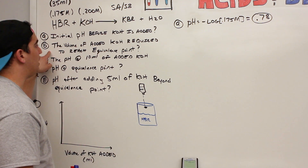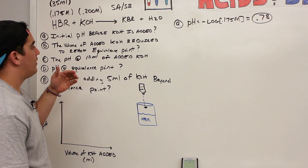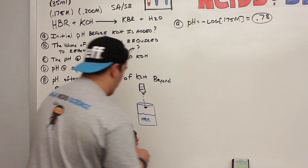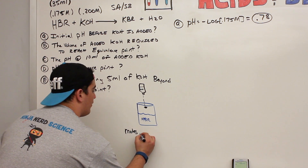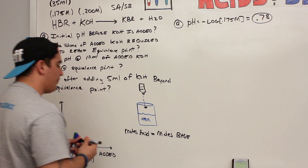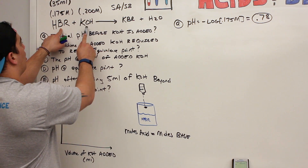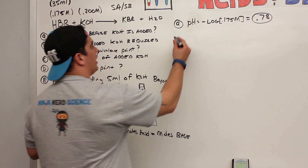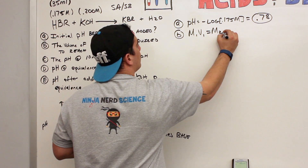Part B asks how much volume of potassium hydroxide is needed to reach the equivalence point. The equivalence point is when the moles of your acid equal the moles of your base. To solve this we use the formula M₁V₁ = M₂V₂, where M₁ and V₁ are for HBr, and M₂ and V₂ are for KOH — we're solving for V₂.